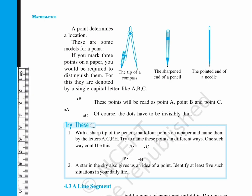For this, they are denoted by a single capital letter like A, B, C. These points will be read as point A, point B and point C. Of course, the dots have to be invisibly thin.